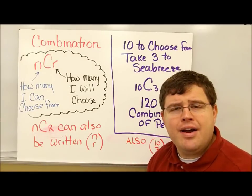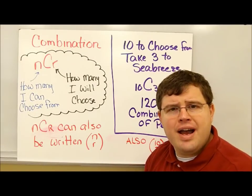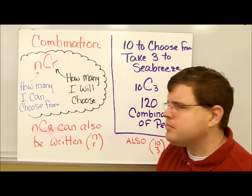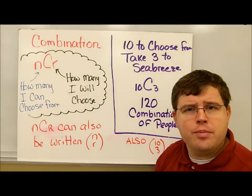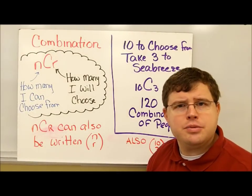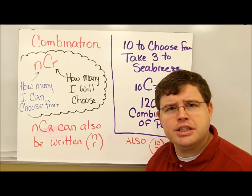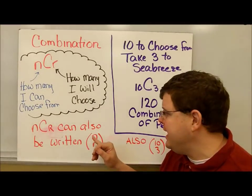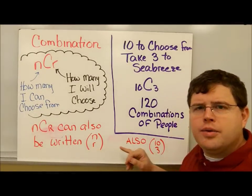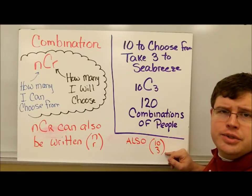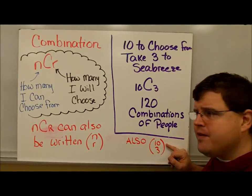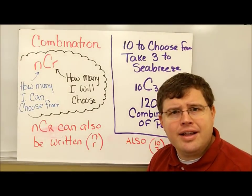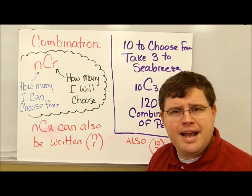I can plug that into my calculator to find out how many different groupings of three people I could pick. When I put that in, I find there's 120 different groupings of three people. It's worth noting that there's a different notation that some mathematicians prefer to use. Some folks will put the N and the R in parentheses with the N on top and the R on the bottom. So here we have 10 choose three.